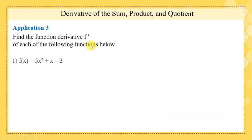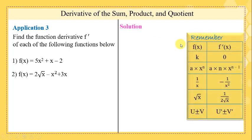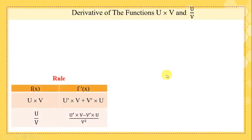Application — do it by yourself. The first result is 10x + 1. The second is 2·(1/(2√x)) - 2x + 3. Simply apply the rules. Now we will talk about the product and the quotient — pay attention.